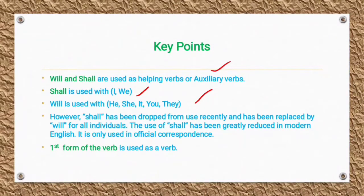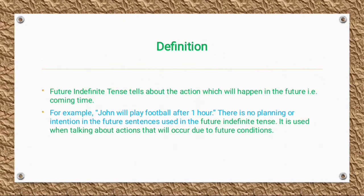The first form of the verb is used in this tense. Its definition: Future Indefinite Tense tells about an action which will happen in the future — what will happen in coming time. For example, 'John will play football after one hour.'